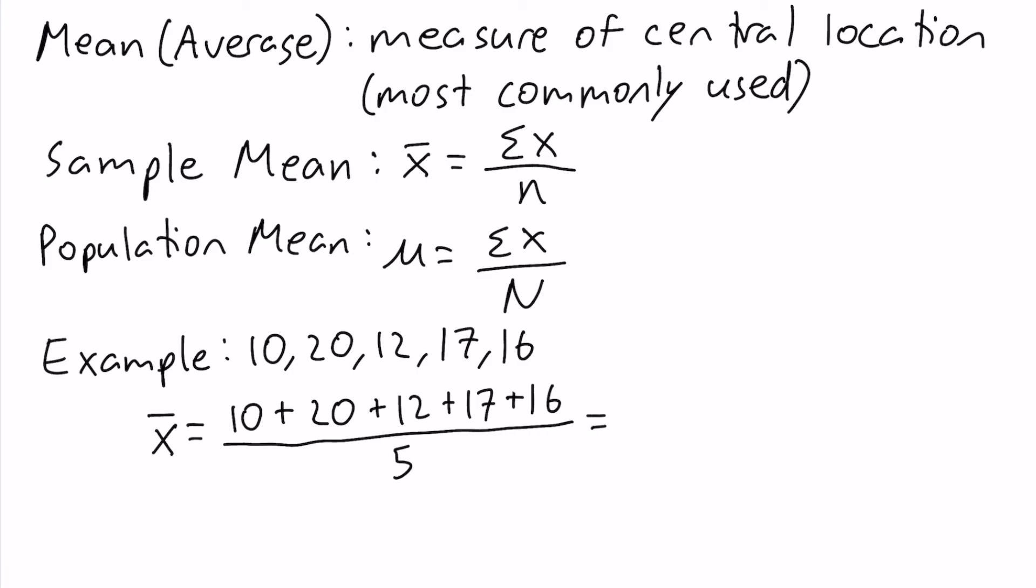Now our numerator equals 75, and 75 over 5 equals 15. So our sample mean is equal to 15. This tells us where the center of our data is.